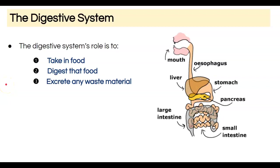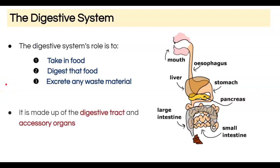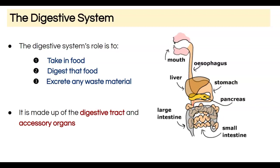The digestive system is comprised of the digestive tract as well as some accessory organs. I want you to think for a minute: what might be the difference between the digestive tract and the accessory organs?